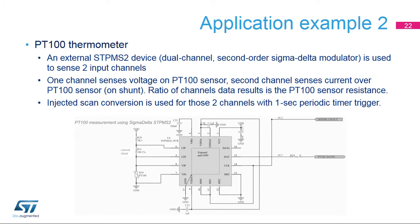This example is a PT-100 thermometer which uses an external STP-MS2 Sigma Delta modulator monitoring two channels. One channel senses the voltage and the second one senses the current on the PT-100 sensor. Both channels are sampled using timer-triggered injected conversions in scan mode. Software then computes the PT-100 resistance from the collected data and finally the temperature.